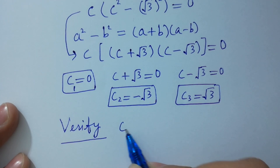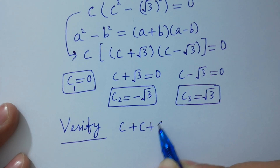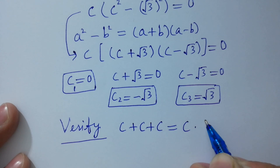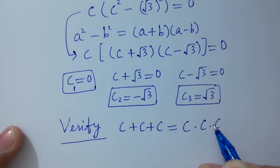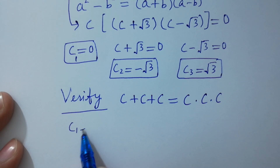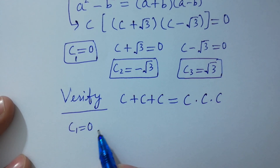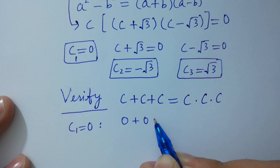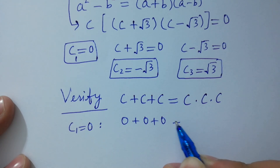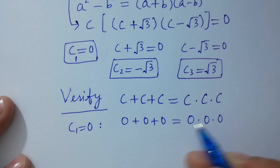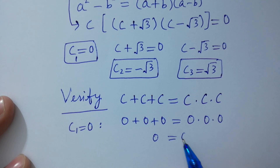Now I am going to verify. For c plus c plus c equal to c times c times c: if c1 equals 0, then 0 plus 0 plus 0 equals 0 times 0 times 0, which gives 0 equal to 0 — absolutely correct.